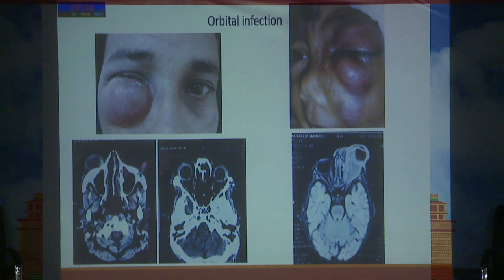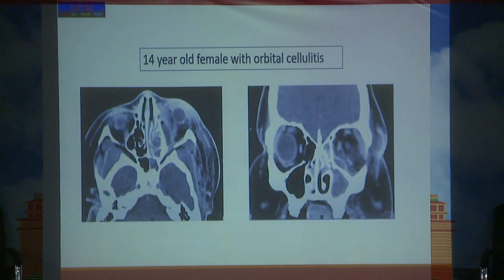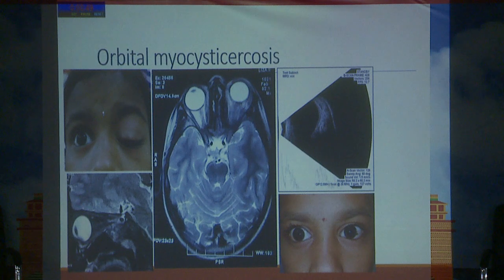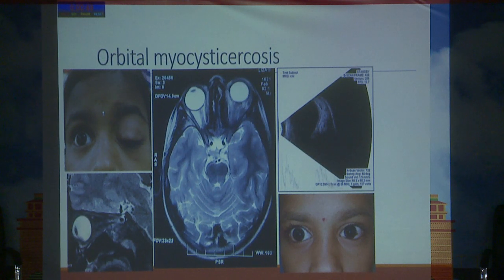In cases of infective etiology where orbital cellulitis or preseptal cellulitis is suspected, a CT will suffice. In this child with orbital cellulitis, a subperiosteal abscess can be seen. In a case of orbital cysticercosis, a patient previously misdiagnosed as hemangioma had an inconclusive MRI, but ultrasound showed cysticerci, and she was treated with albendazole and steroids and recovered well.